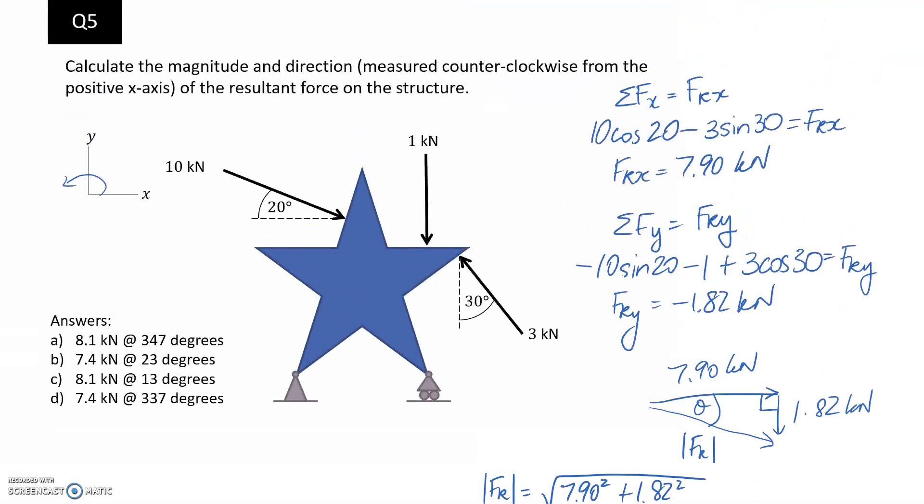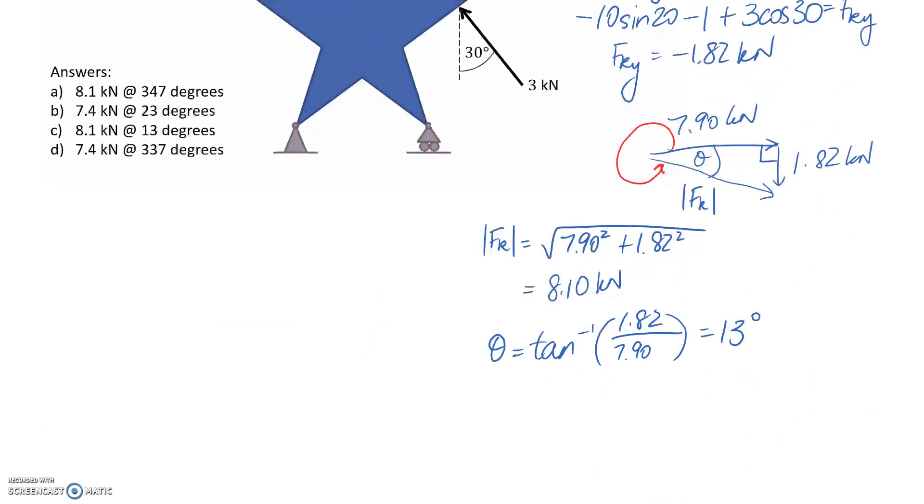But remember now we want it to measure from the positive x-axis all the way around. So that's like going from here all the way around to there. So if this angle is 13 degrees, and we know a full circle is 360, the difference, which is just this red bit in here, is going to be 360 minus 13. So let's call it alpha.